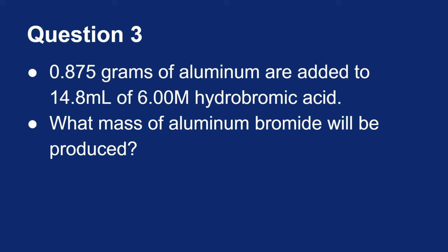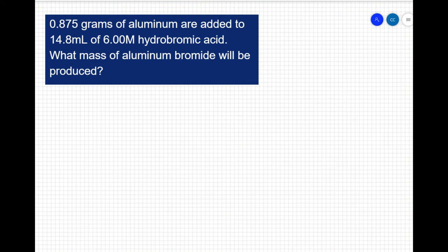I would like to know what mass of aluminum bromide will be produced. So first thing is first, we have to write a balanced equation. Always the first thing to do in a stoichiometry problem.